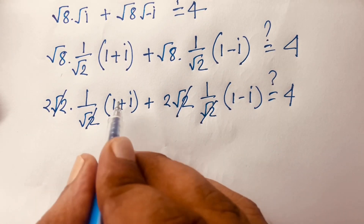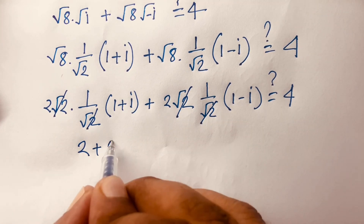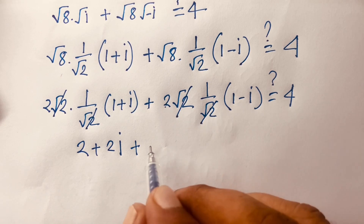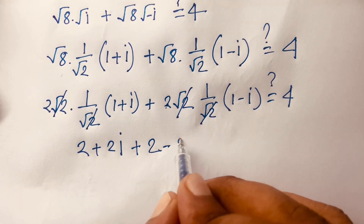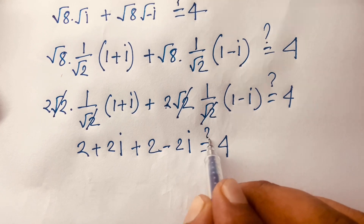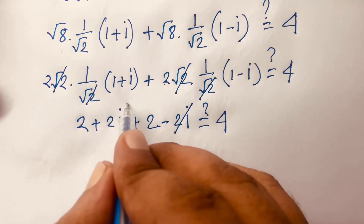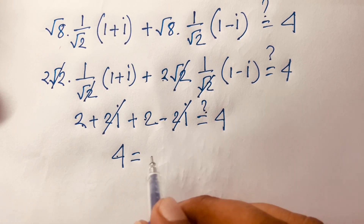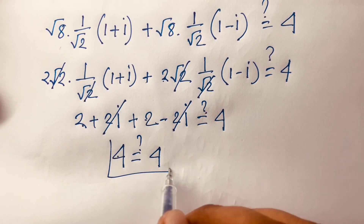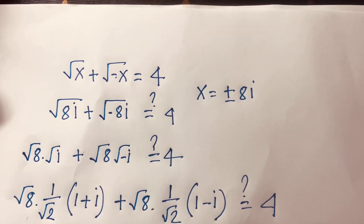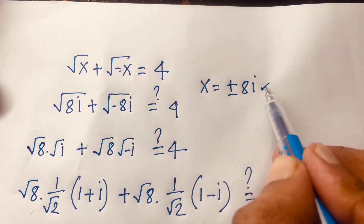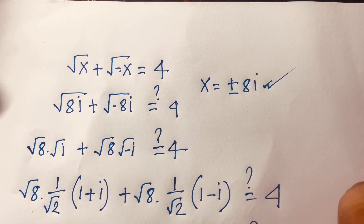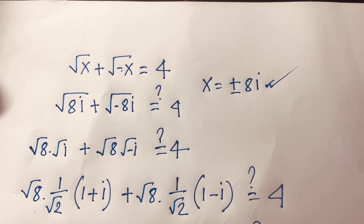After cancellation we get 2 times 1 plus 2i, plus 2 times 1 minus 2i, which simplifies to 2 plus 2i plus 2 minus 2i. The 2i terms cancel, giving us 2 plus 2 equals 4, which confirms 4 equals 4. So x equal to plus 8i is verified. The same result holds for x equal to minus 8i. Thank you all — if you enjoyed this video please subscribe to my channel. Goodbye!